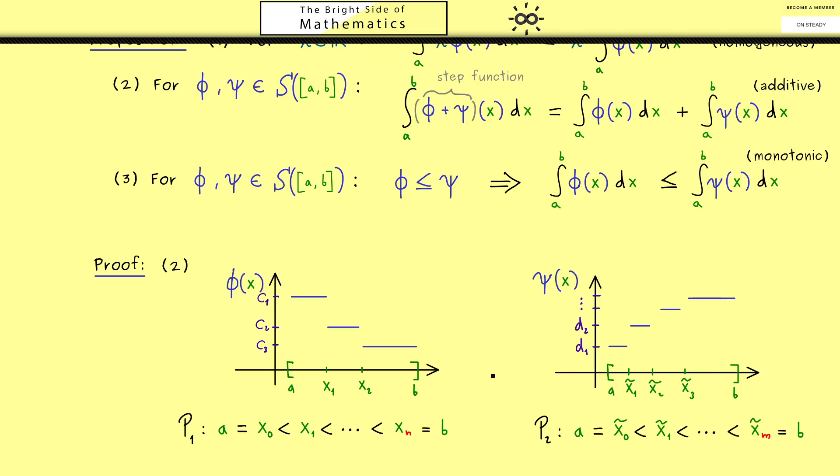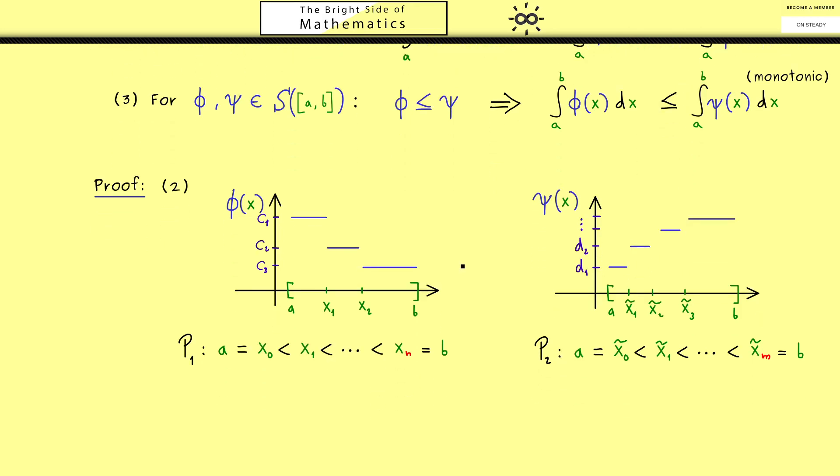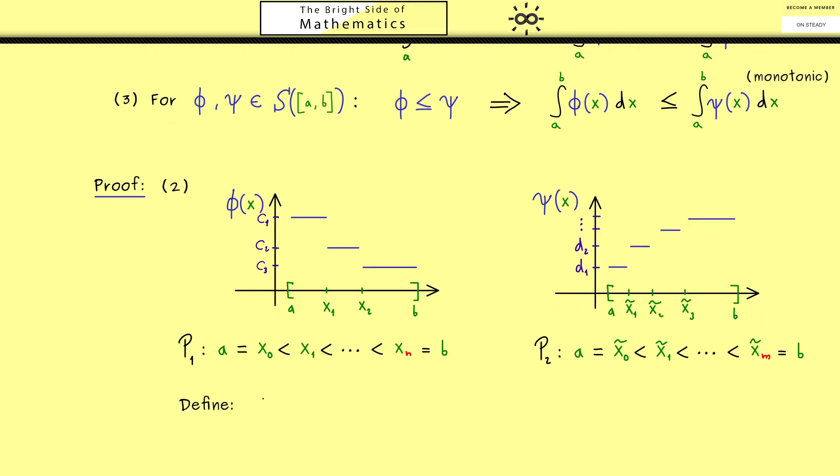In order to calculate this integral on the left hand side, we need a partition that works for both step functions at the same time. We learned in the last video how to do this. We just define P₃ as the union of P₁ with P₂. Then we get a new partition and maybe now we use double tildes to denote it. The idea is that we have enough points such that all the splits we need are included. The nice result is now we can choose the same partition for both step functions.